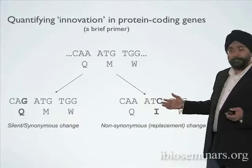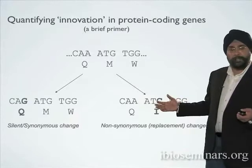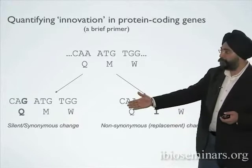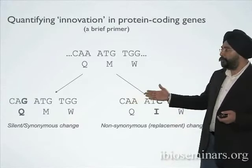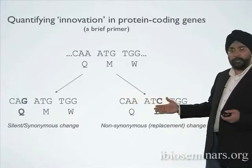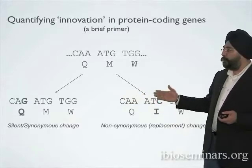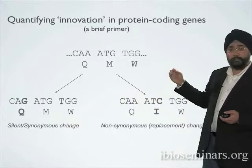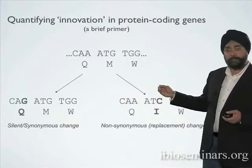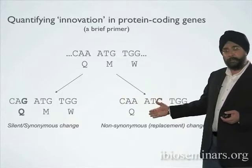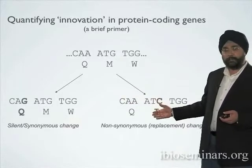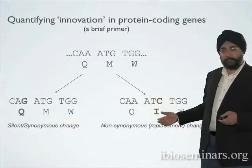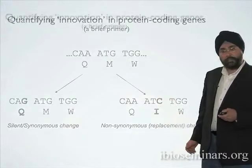Now, both of these are sort of equal likelihood mutations — you can actually have a synonymous mutation or a non-synonymous mutation — but you can appreciate that, based on the genetic code, you're much more likely to see an amino acid-altering mutation just by random chance alone.